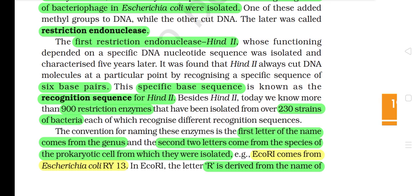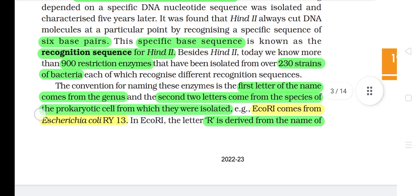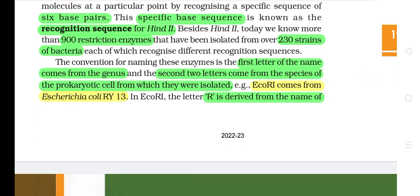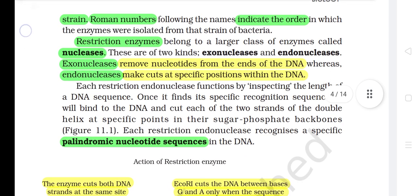Besides Hind II, today we know more than 900 restriction enzymes that have been isolated from over 230 strains of bacteria, each of which recognizes different recognition sequences. The convention for naming these enzymes is: the first letter comes from the genus and the second two letters come from the species of the prokaryotic cell from which they were isolated. For example, EcoRI comes from E. coli RY13. In EcoRI, the letter R is derived from the name of the strain. Roman numerals following the names indicate the order in which the enzymes were isolated from that strain of bacteria.